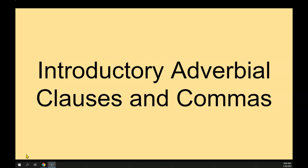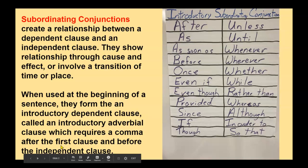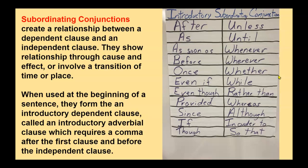So this involves introductory adverbial clauses and commas. First, I want to talk about what a subordinating conjunction is. If you look here on the right, you see that I have an image of the subordinating conjunction poster. This is just some subordinating conjunctions: after, as, as soon as, unless, until, whenever, while, even though.